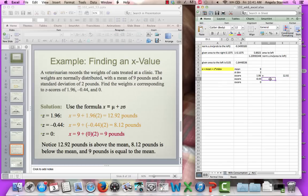I can do the same thing for a z-score of negative 0.44. So I say equals the mean, plus the z-score, times the standard deviation. And now I get a cat weight of 8.12 pounds. And let's do the same thing here. Now, what are we expecting for a z-score of 0? We know that a z-score of 0 is the mean of the standard normal curve. So what we're expecting is to get the mean for the cats of 9 pounds. So we do equals our mean, plus our z-score of 0, times the standard deviation. And indeed, we get our mean of 9 pounds.